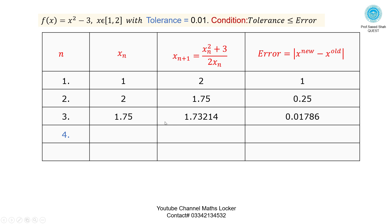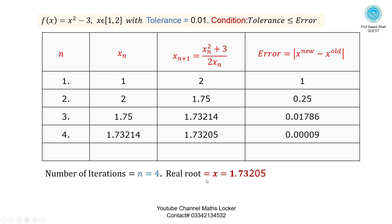Iteration 4: Take xₙ = 1.7321. Substituting into the formula: xₙ₊₁ ≈ 1.73205. Error = |1.73205 - 1.7321| ≈ 0.000009. Check condition: 0.01 is not less than 0.000009 — condition is satisfied. Stop the loop. Number of iterations = 4. Real root is approximately 1.73205.